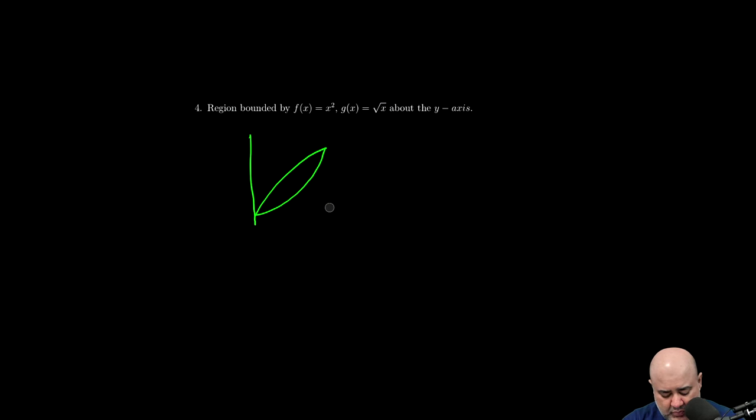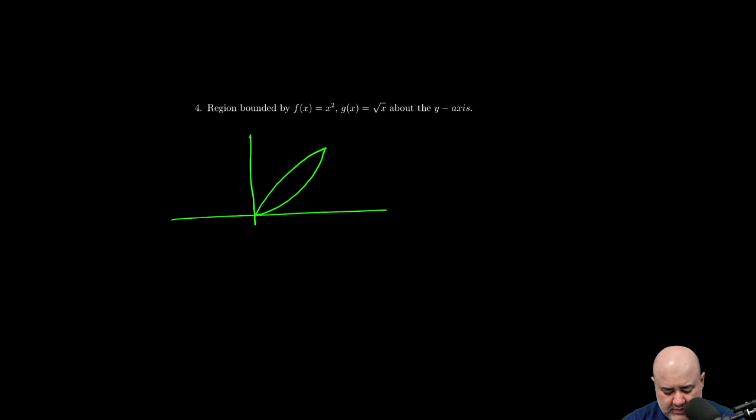So I know that this point will be, I know that this will be one and the y value is one. And I have to spin this around the other side.